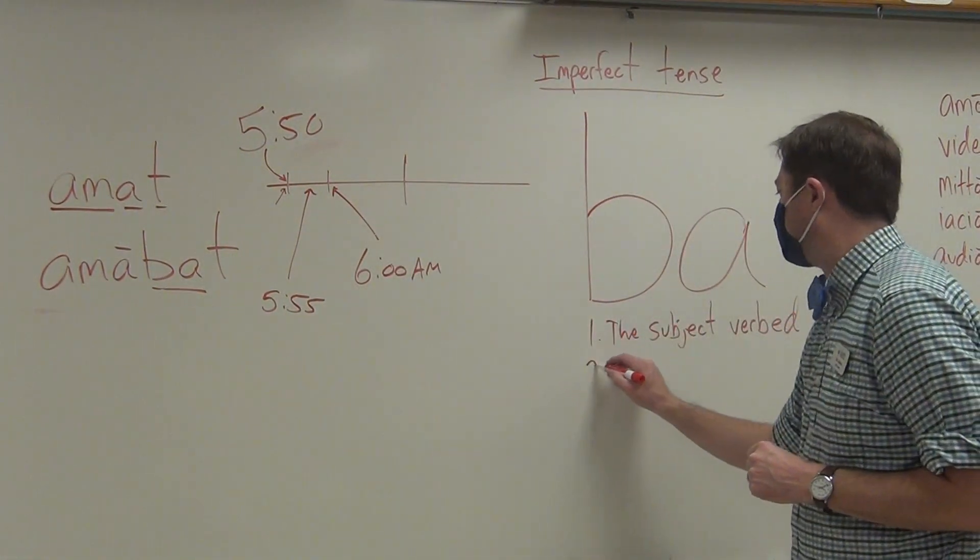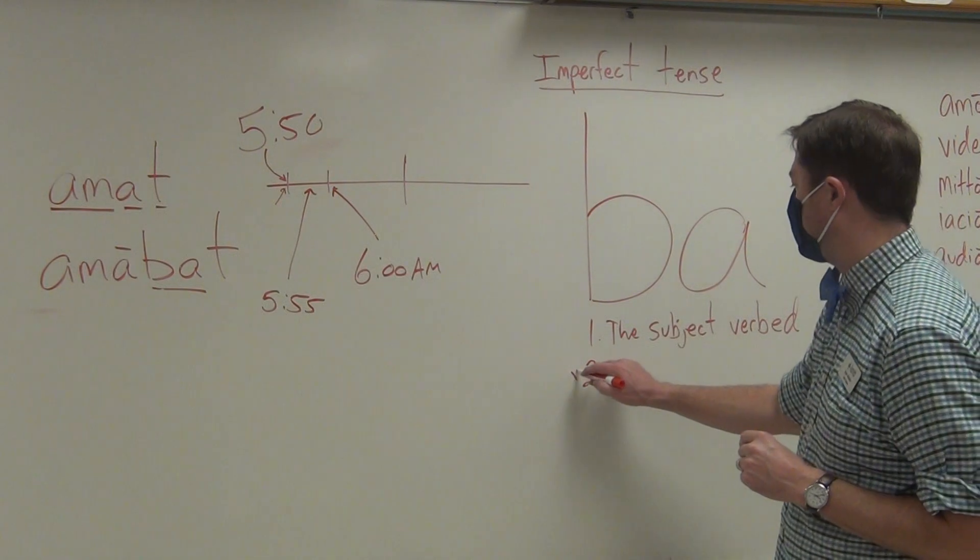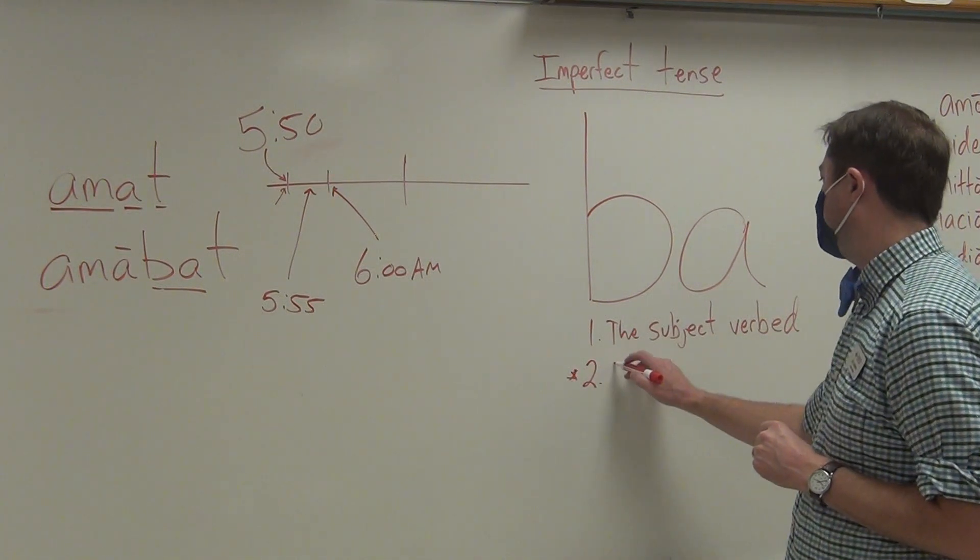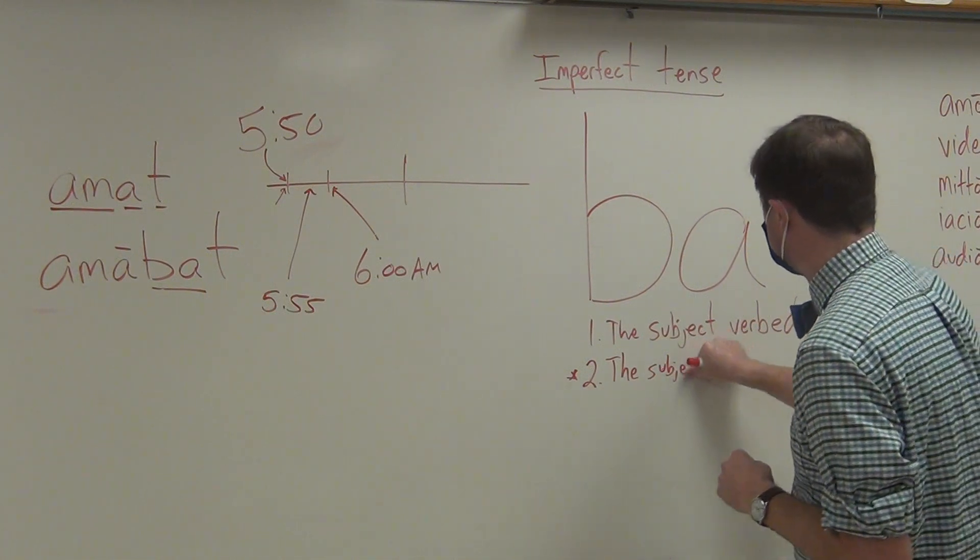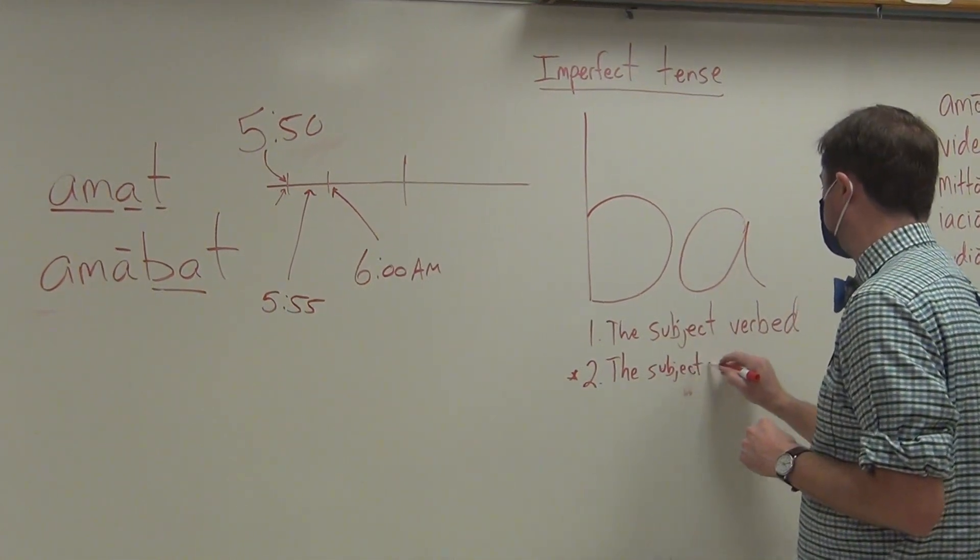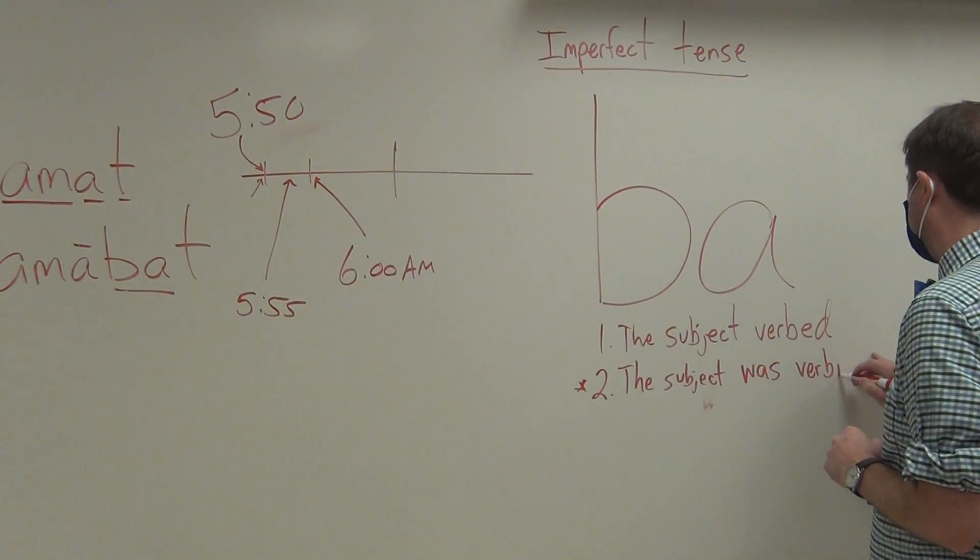The second one is my favorite expression for the imperfect tense, and so I'm going to put an asterisk by it. And the way that you would express it: the subject was verbing.